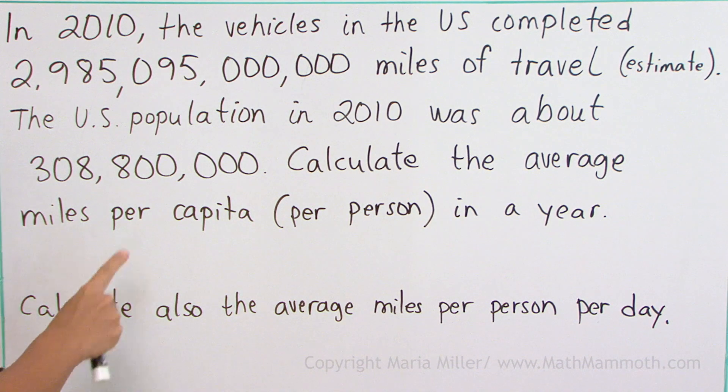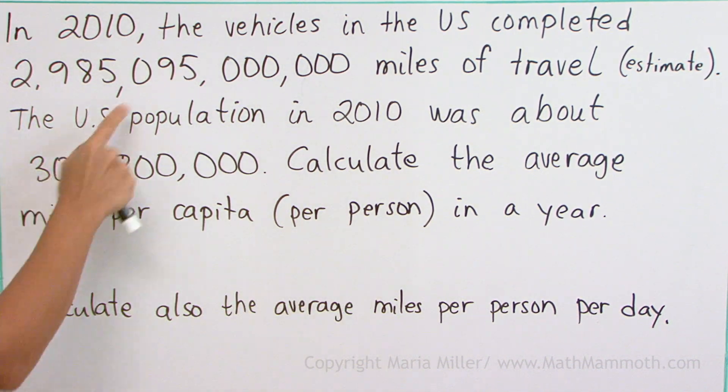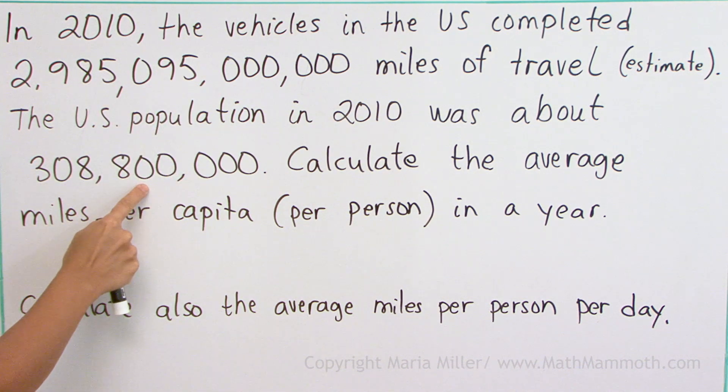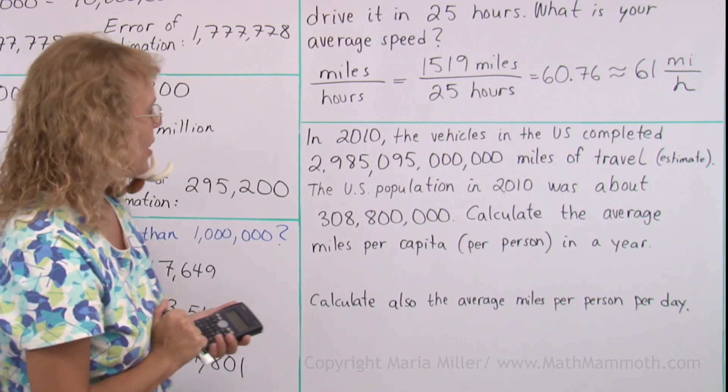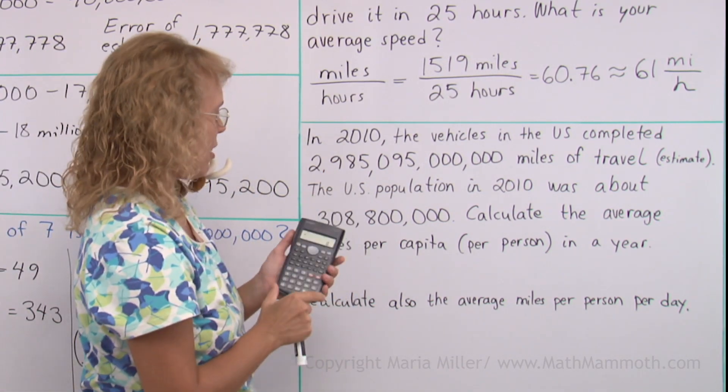And again, it has this per year, miles per person. So we take the miles and divide them by the number of persons. That's all we need to do. And a calculator will help. Let's see if we can fit this really long number into the calculator.